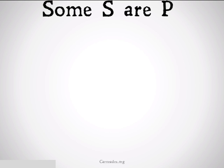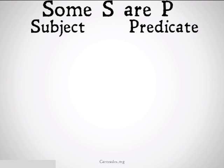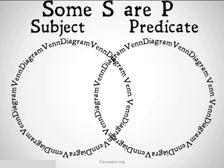To understand this, we're going to set up a Venn diagram. We'll put our subject on the left, our predicate on the right, make our circles, and in order to represent this statement, instead of shading something in, we're actually going to draw an X. We will put the X in the very center of our Venn diagram to represent that there is some subject that is also a predicate — that there is at least one thing in the overlapping area between subject and predicate.